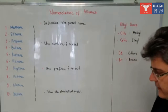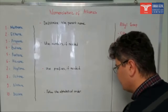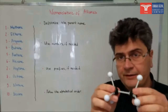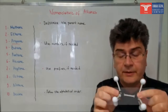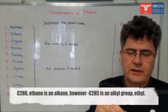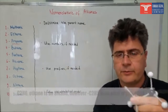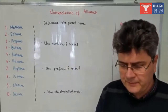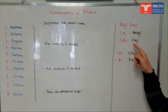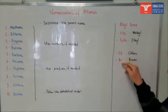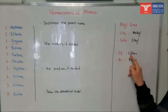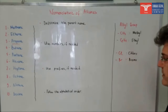A similar thing happens with ethane. Both carbon atoms are making four connections, but if you take one hydrogen out, this ethane molecule becomes an ethyl group, which could be added to somewhere. In addition to these alkyl groups, you can also add some halogens to the carbon chains as well. Chlorine becomes 'chloro' in the nomenclature, and bromine becomes 'bromo'.